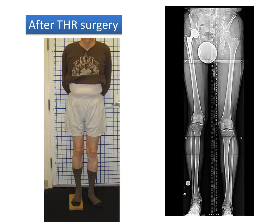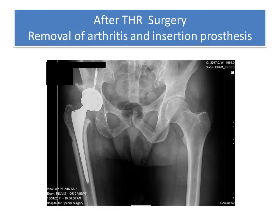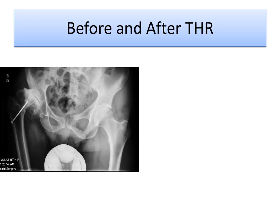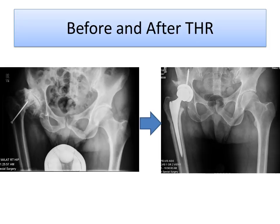After total hip replacement, you can see that he has gained a substantial amount of length with the hip replacement. There was removal of the arthritis and insertion of the prosthesis, and it allowed unlocking of the hip and mobilization of the hip. You'll notice the difference between before and after — a large perceived lengthening of the leg. Again, the hip replacement allowed unlocking of the pelvis and mobilization of the hip, and allowed what the patient perceived to be a large lengthening without actually stretching the sciatic nerve.